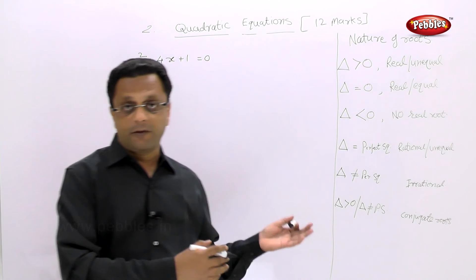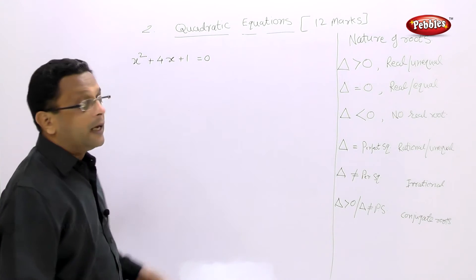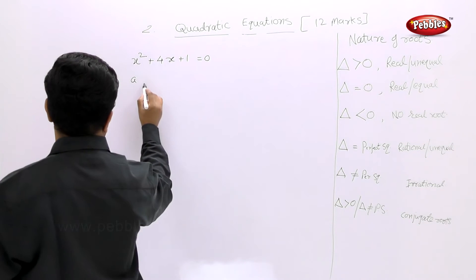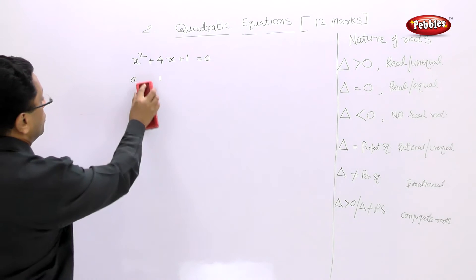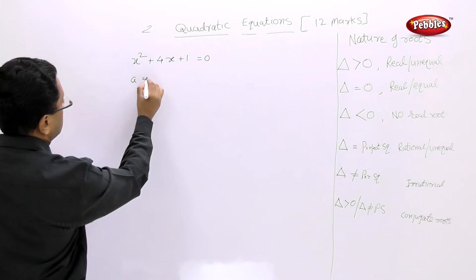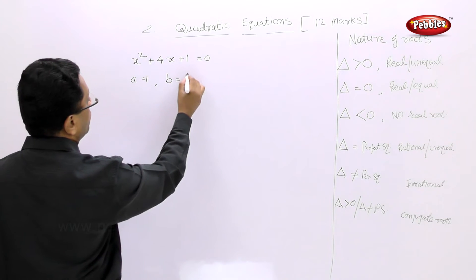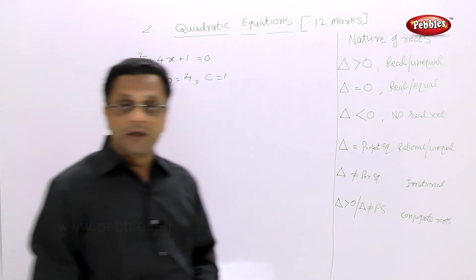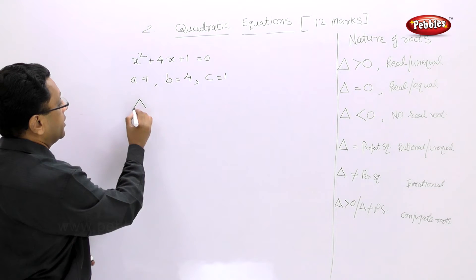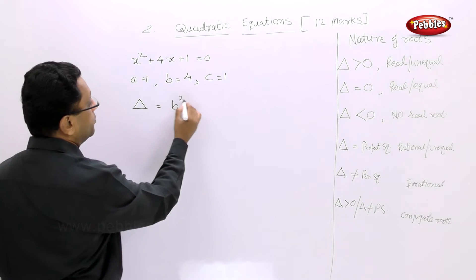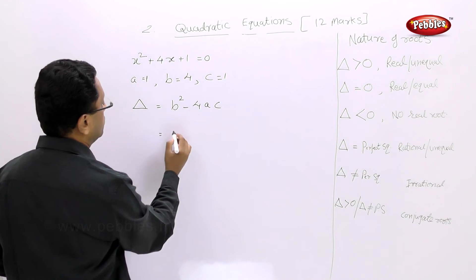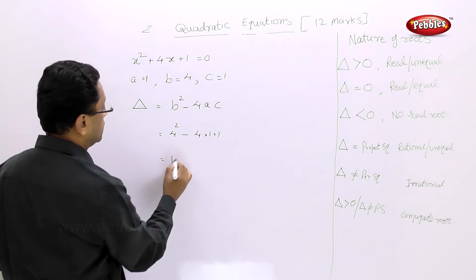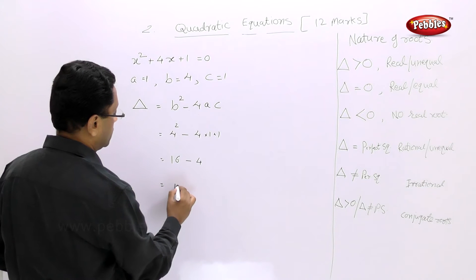This is very easy. First, compare with ax² + bx + c = 0 and find a, b, and c. Here a = 1, b = 4, and c = 1. Then the discriminant delta = b² - 4ac = 4² - 4×1×1 = 16 - 4 = 12.